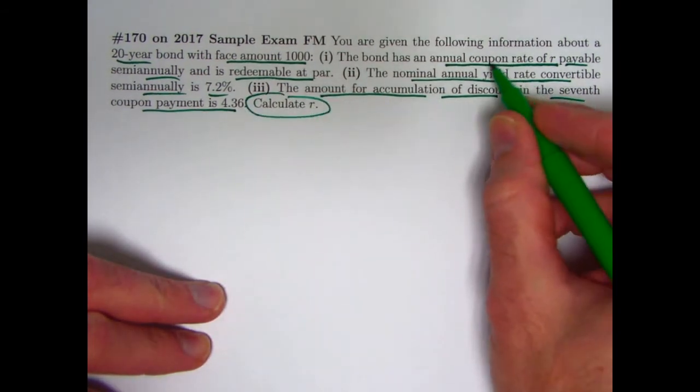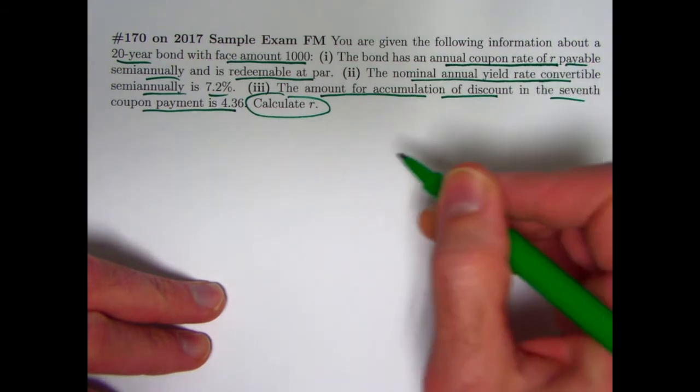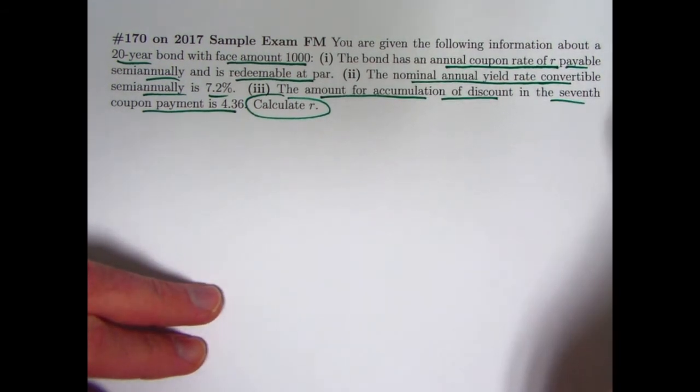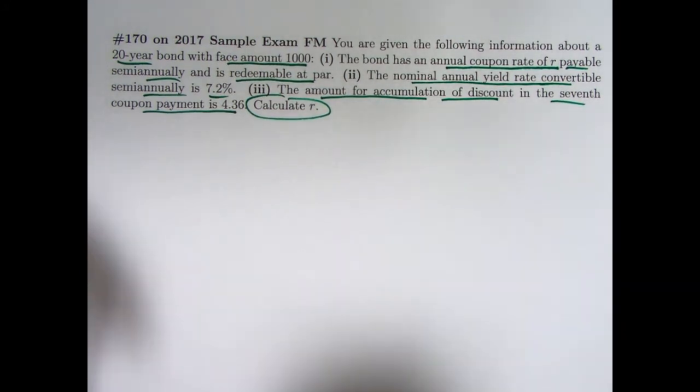Calculate R, this thing that is the annual coupon rate, payable semi-annually. So again, R over 2 is the effective semi-annual coupon rate. Don't solve for R over 2, solve for R.